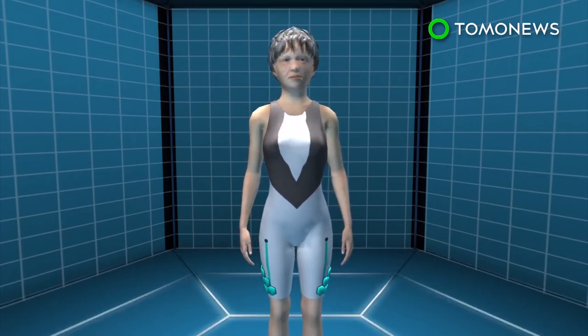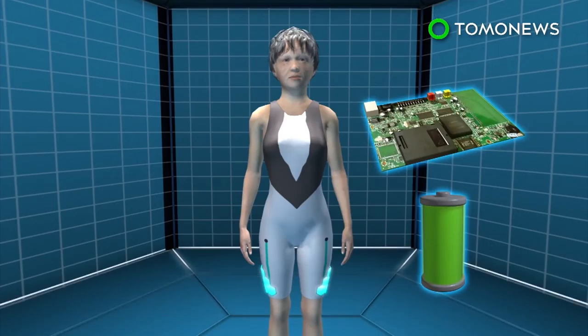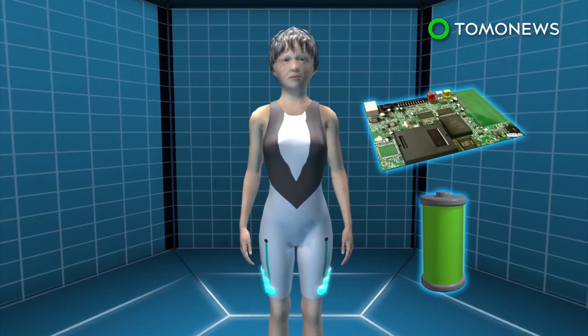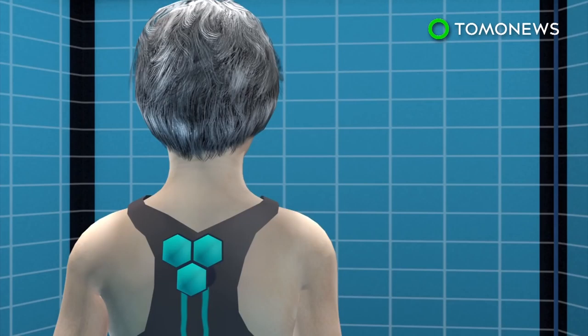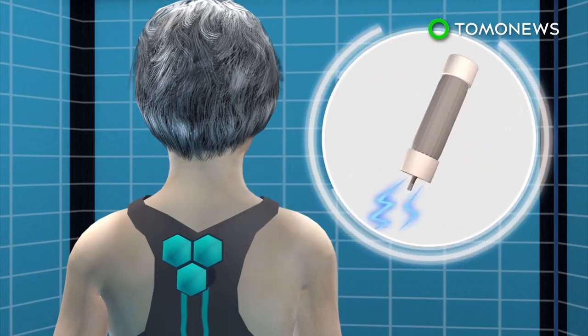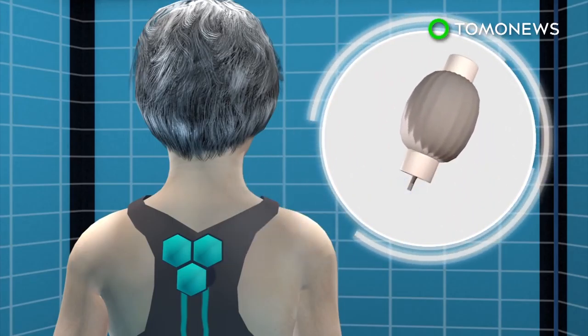The hexagonal pods placed around muscle groups contain batteries, control boards, and elastic muscle technology. The technology contains a smart material that behaves like human muscle, which expands when exposed to an electric current and contracts when the current is removed.